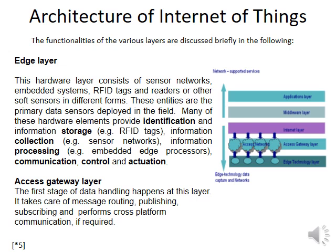Above the sensor layer there is the access gateway layer. The first stage of data handling happens at this layer. The sensors layer sends data to the gateway layer, which then sends it to the cloud or internet. On the cloud, you can develop applications via mobile apps or web server applications from which users can interact with that data.